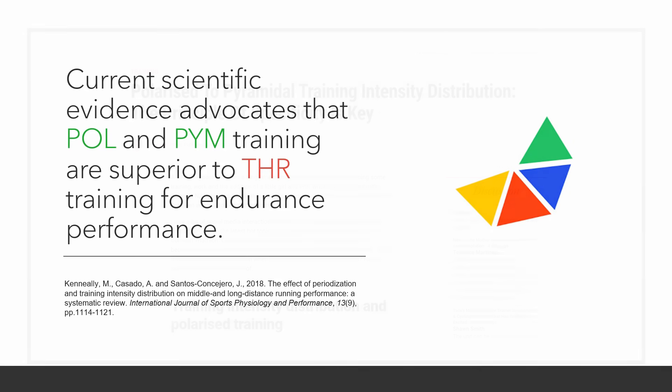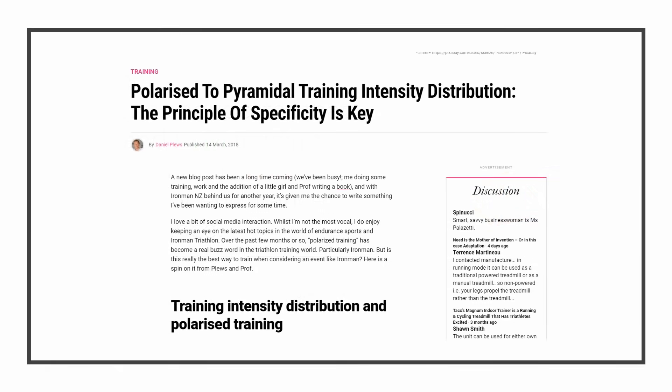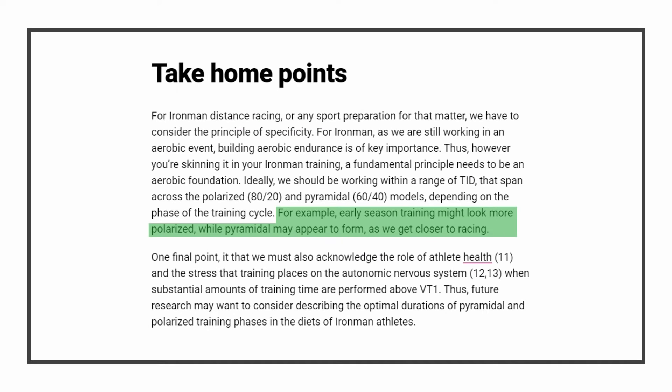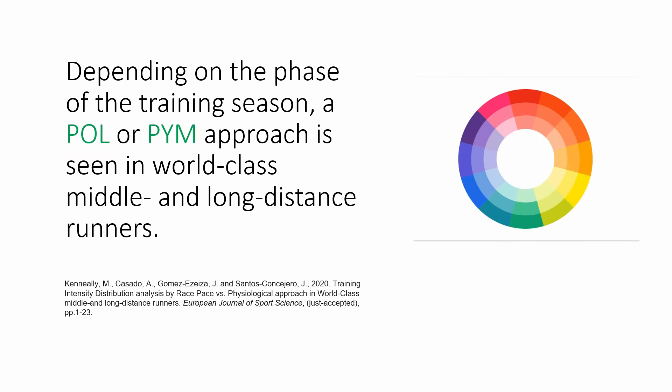An insight from Dr. Daniel Plews regarding Ironman training noted that training intensity distributions are likely to change depending on where you are in your training program. At the start of a season, training may look more polarised, whilst nearing race day your training may look more pyramidal, when athletes tend to add more specific race-paced sessions. A recent publication observed this trend in a group of world-class middle and long distance runners, confirming that depending on where they were in the season, a polarised or pyramidal training approach was more apparent.